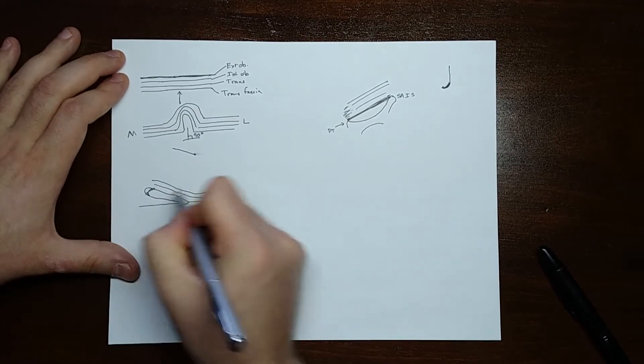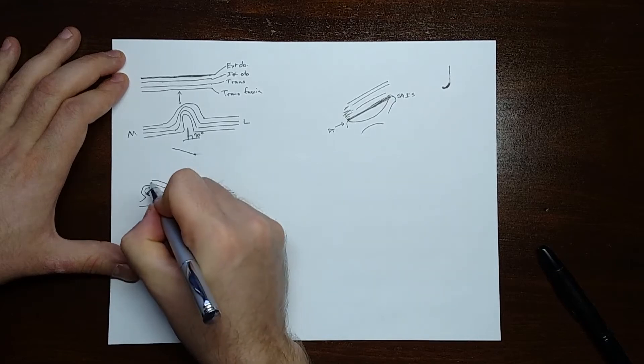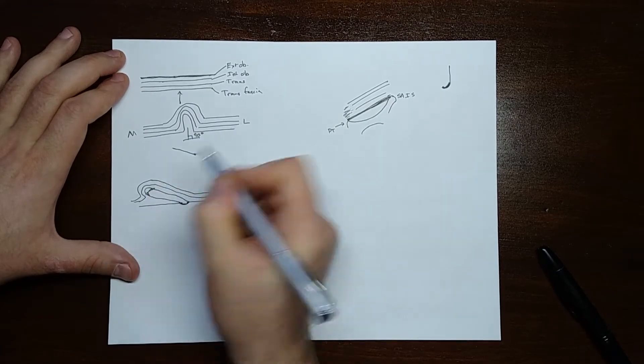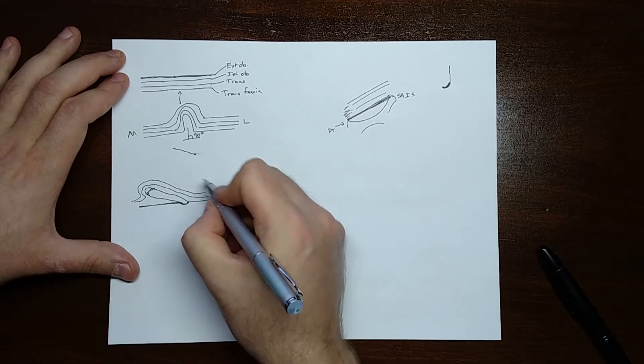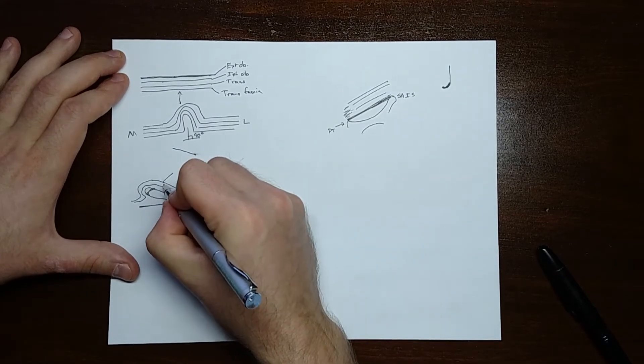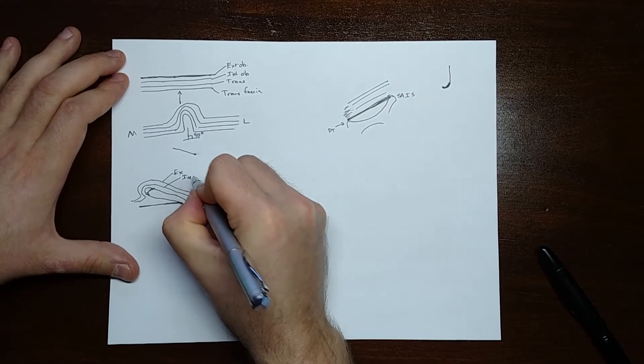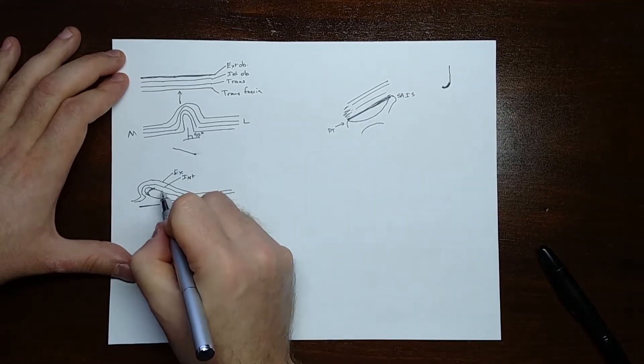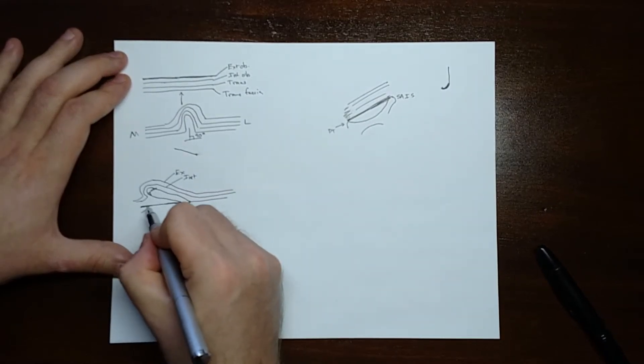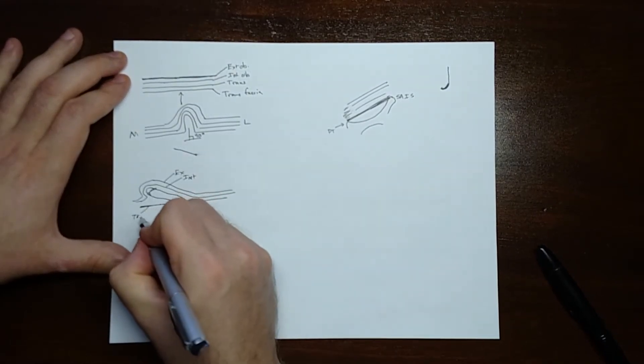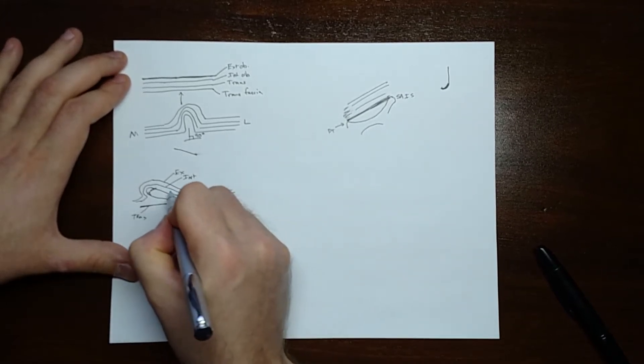Your superficial ring will form out here and your deep ring will form out here. You can see why this transversalis fascia becomes the posterior wall, and the aponeurosis of the external oblique and the internal oblique become the anterior walls. And the transversalis fascia becomes the... I forgot one layer in there. Sorry, guys.